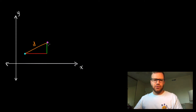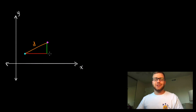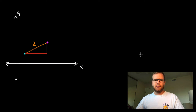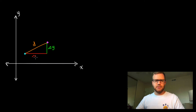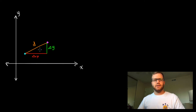The vertical change is the change in the Y coordinates, and we use the Greek letter Delta — Delta is a triangle symbol — to represent "the change in." So this is Delta Y, the change in the Y coordinates, and this is Delta X, the change in our X coordinates.